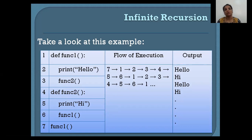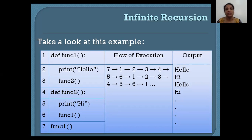The output you're going to see is 'hello hi hello hi hello hi' repeated infinitely. This is called infinite recursion because in this program you're not saying when to stop — it just goes on and on. But generally when we write a program, we want it to stop at some point.